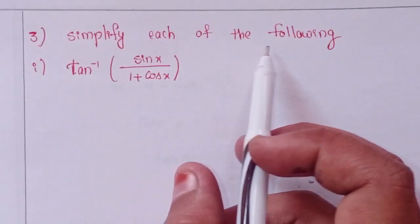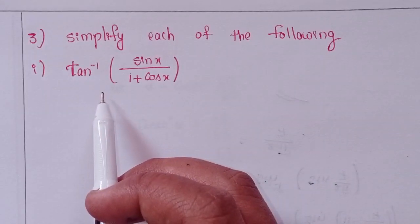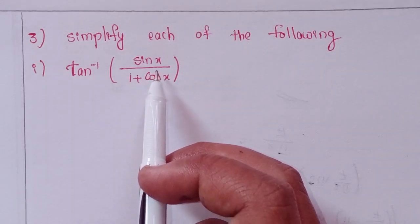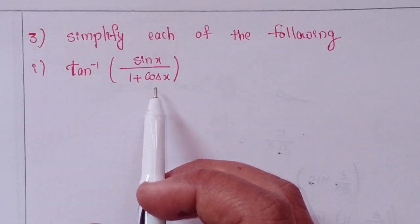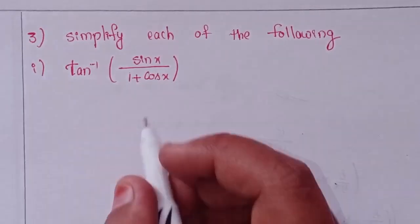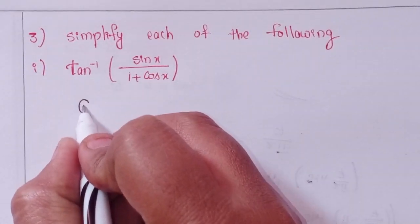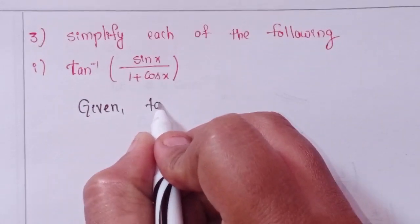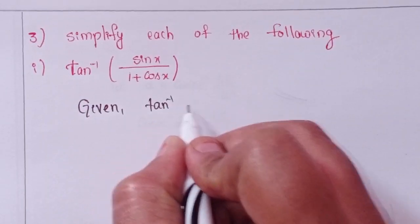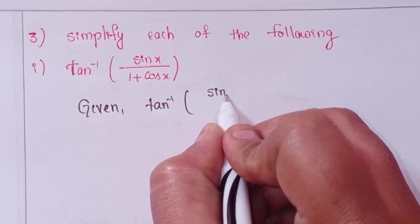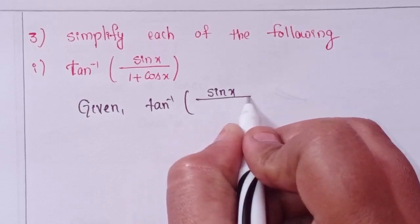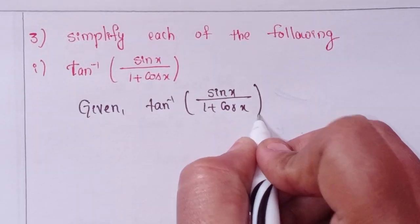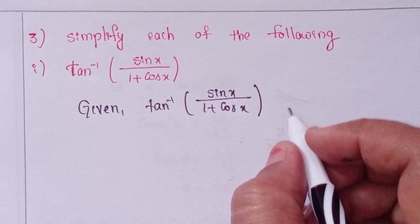Simplify each of the following. We are given tan inverse of sin x divided by 1 plus cos x.